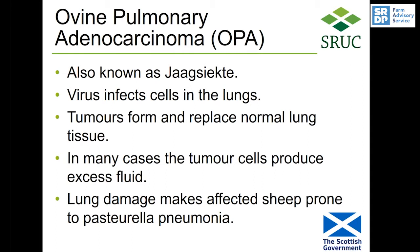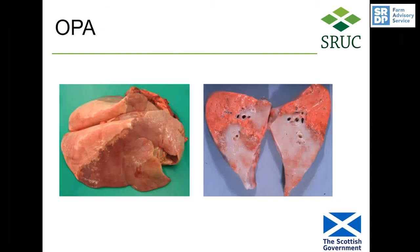In many cases the tumour cells produce too much fluid, and the lung damage causes affected sheep to be very prone to pastoral pneumonia. This is quite a severe case — the nice pink tissue is normal lung, spongy to the touch, while the dark tissue would feel very firm. This is all tumour replacing the normal lung tissue.